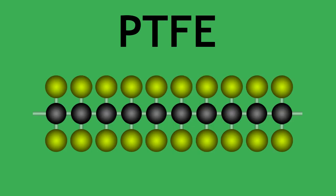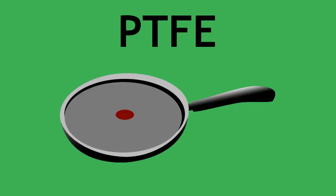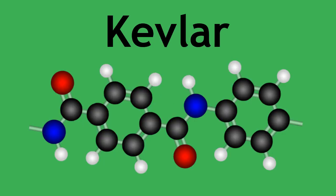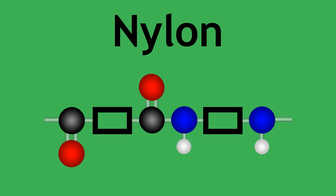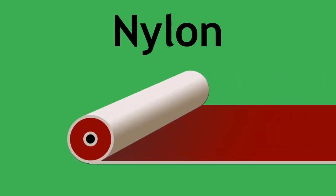Poly-1,1,2,2-tetrafluoroethene, also known as PTFE, is a non-stick coating on frying pans, as well as being used in bearings and other low-friction surfaces. Kevlar is a unique polymer used to form bulletproof vests and jackets. Nylon is used in textiles, clothing and carpets.